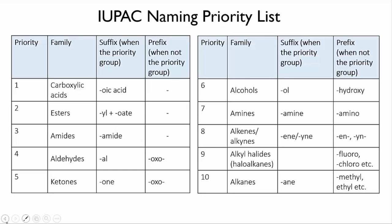Here's our list of functional groups again, in the same order that we've been using so far, but you'll notice that I've added a few new columns. On the left I've put numbers in order from 1 to 10, and that indicates the priority of the group, or how important it is.